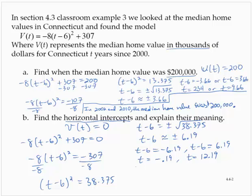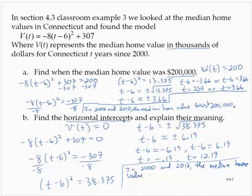This would mean t is equal to approximately 0, or t is approximately 12. In 2000 and 2012, the median home value was $0.